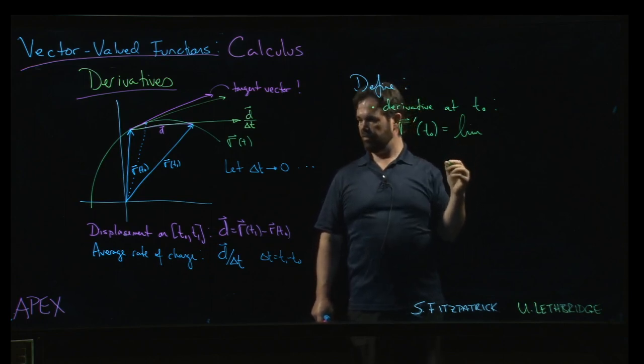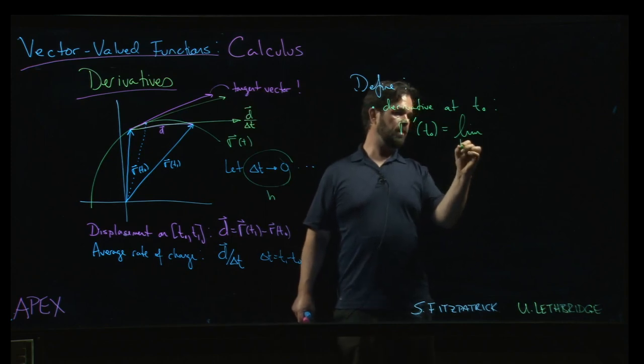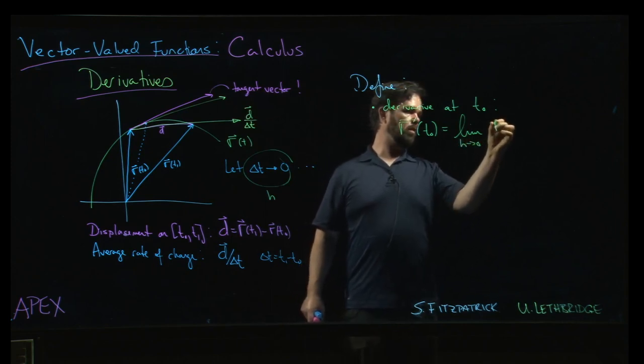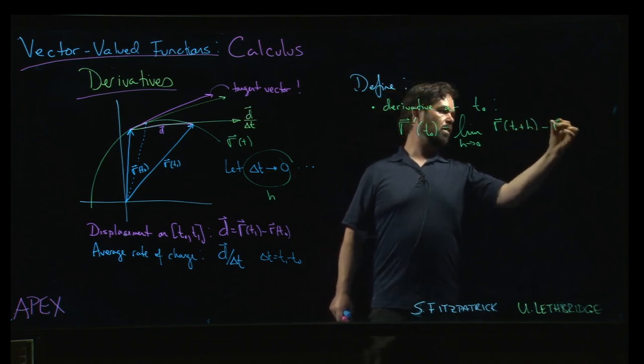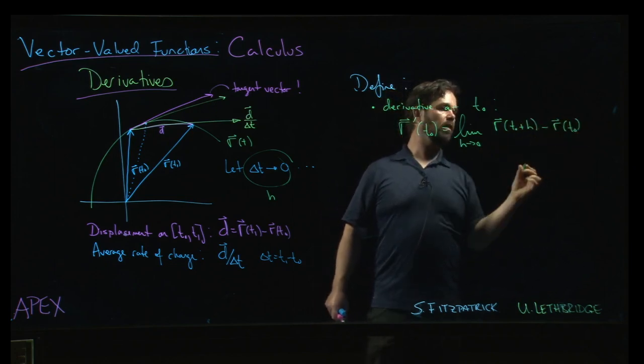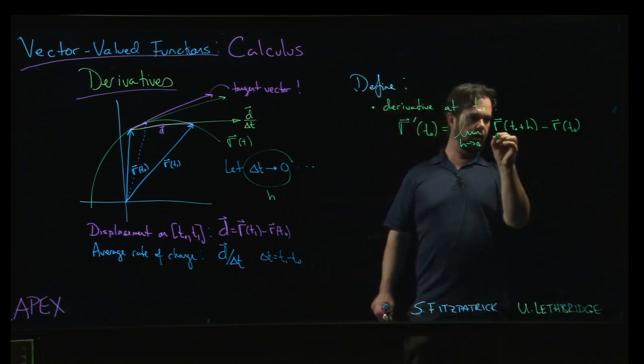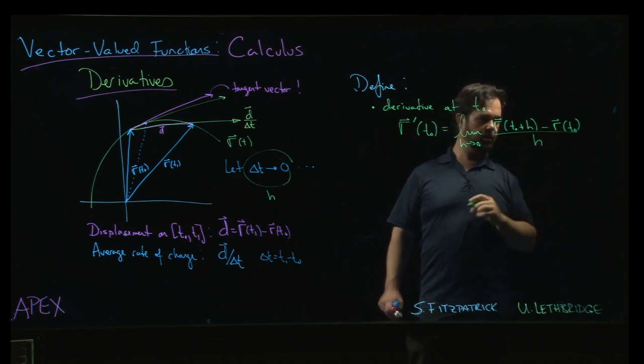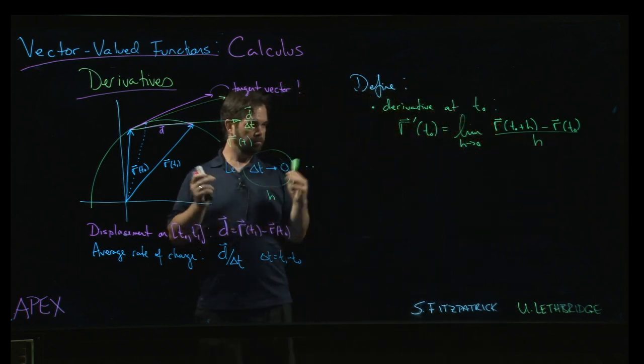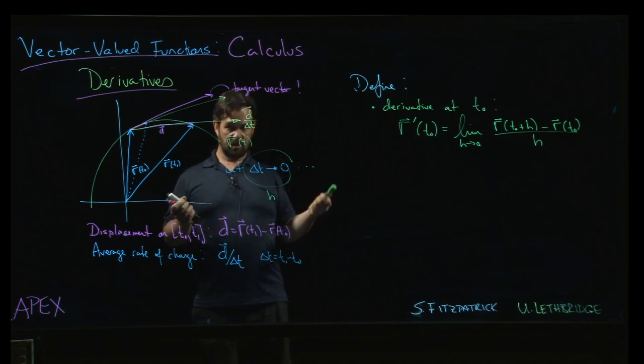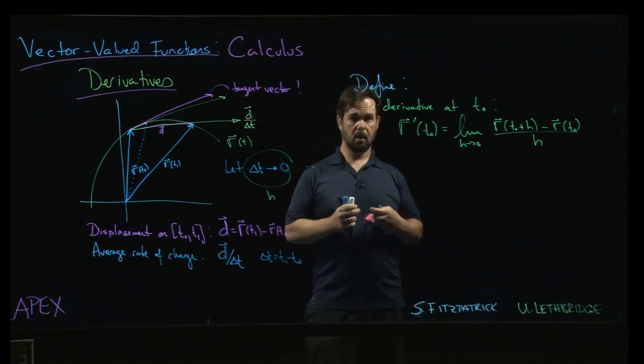So this will be the limit as h goes to zero of r of t naught plus h minus r of t naught—so the displacement when we change t by this little amount h—and then we divide by the length of the interval, which is just h. So that gives us the derivative at a particular point t naught.